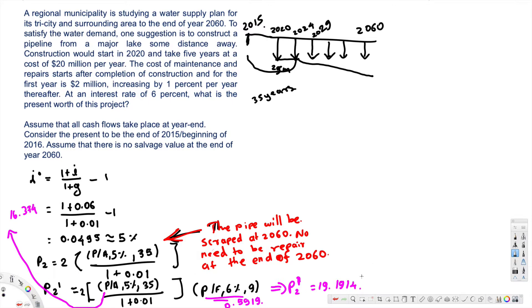Now let's continue. P construction equals 20 times (P/A, 6%, 5) and (P/F, 6%, 4). Then P construction gives us 66.728, and P equals P construction plus P repair.